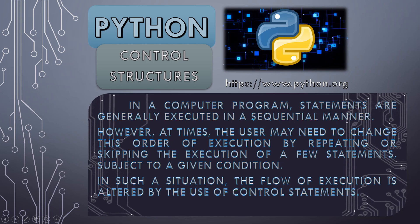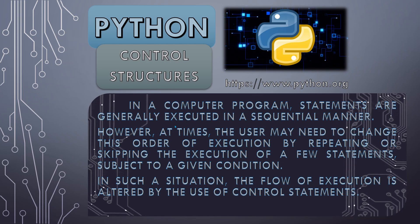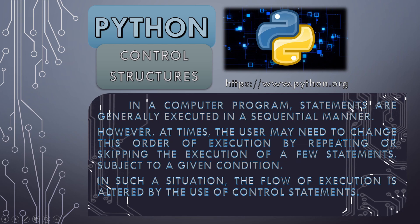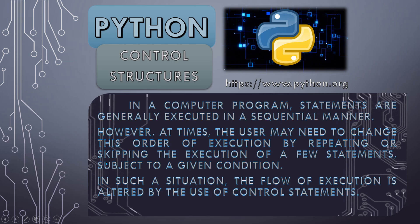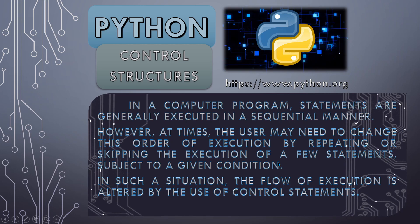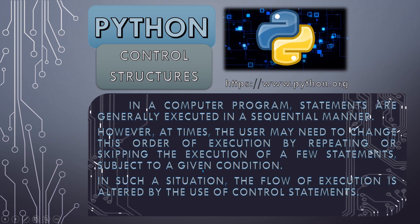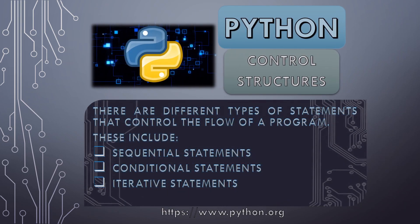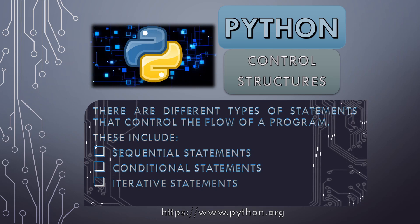In a computer program, statements are generally executed in a sequential manner, one after another. However, at times the user may need to change this order of execution by repeating a particular statement or skipping statements as per the need, subjecting a few statements to a given condition. In such situations, the flow of execution is altered by the use of control statements.